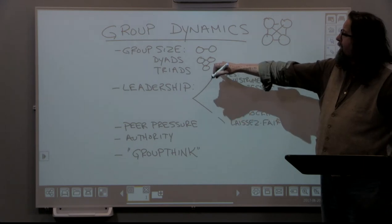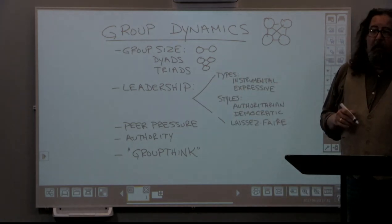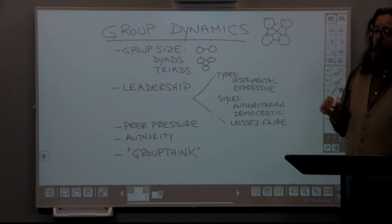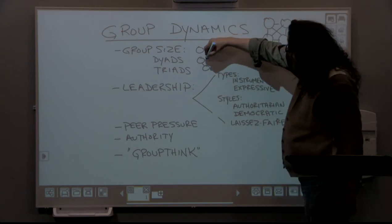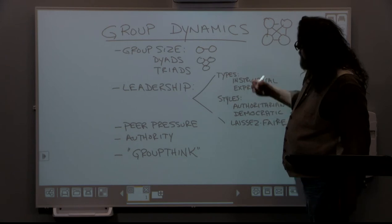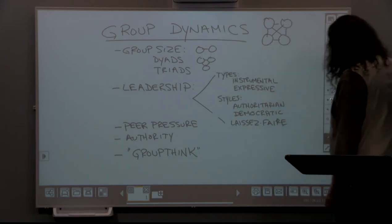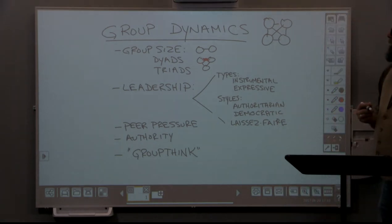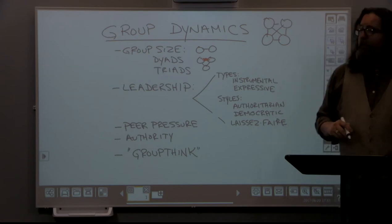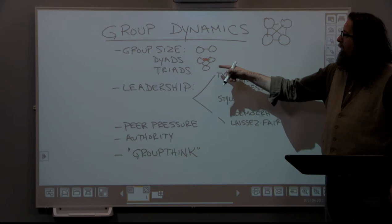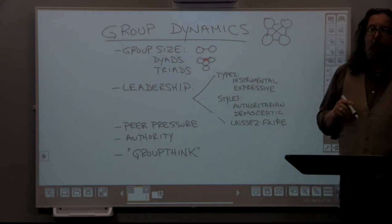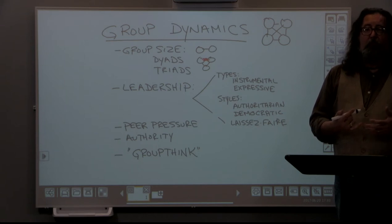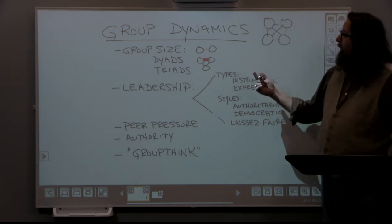As small groups grow larger, they become more stable but the relationships within them become less intense. If you have four people, you would have six relationships. If you have five people, you have ten relationships. Six people, fifteen relationships. Seven people, twenty-one relationships. So as group sizes get larger, the relationships become less intense but the stability of the group improves. If one or more people leave, there's still a sizable number of people and relationships that can exist within the group.